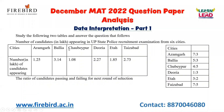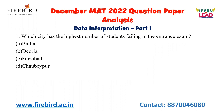Study the following two tables and answer the questions that follow. The first table shows the number of candidates appearing in the UP state police recruitment examination from six cities, with numbers given in lakhs. The second table shows the ratio of candidates passing and failing for the next round of selection. Now let us see the first question.